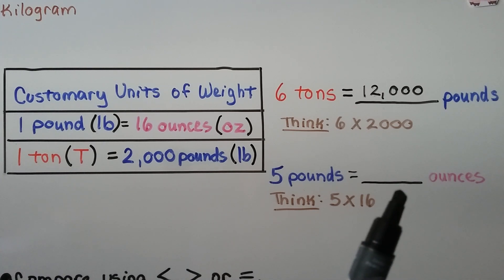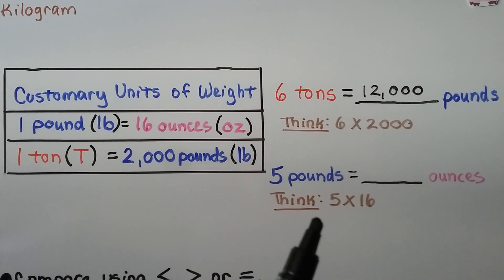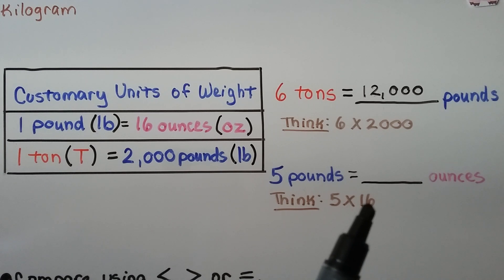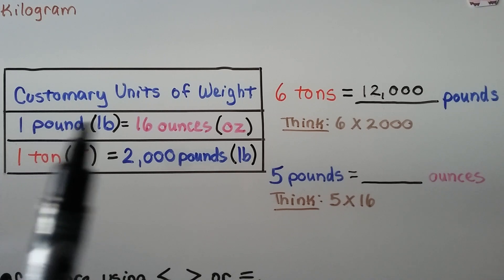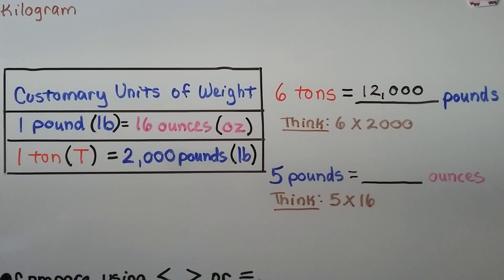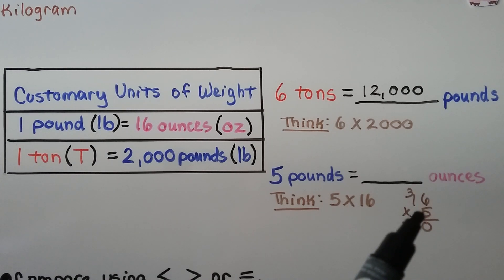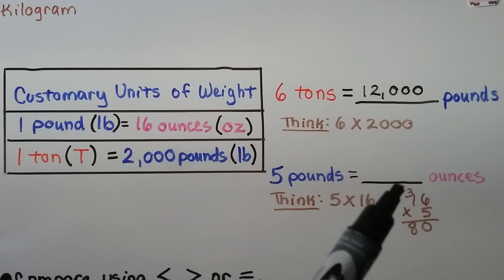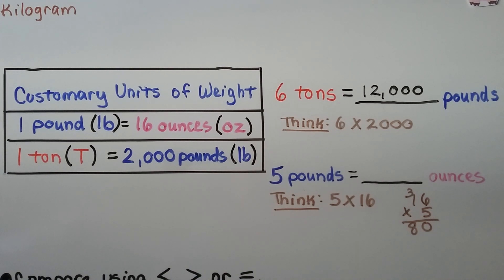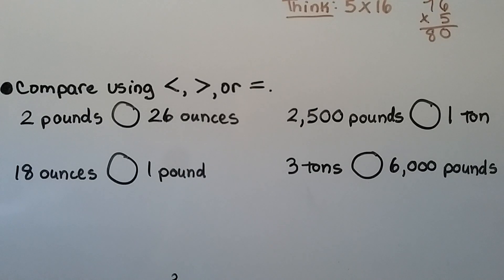Five pounds equals how many ounces? Since one pound equals 16 ounces, we multiply 5 × 16. We get 80 ounces — five pounds is equal to 80 ounces. Next, we need to compare using less than, greater than, or equal symbols: we have two pounds and 26 ounces.